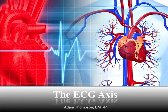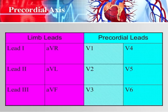Welcome back. This is part five of the ECG axis tutorial. We've already covered how to discover your frontal plane QRS axis, and I gave you the easy quadrant method for discovering the QRS axis on an EKG. Now we're going to do part five and talk about the precordial axis.